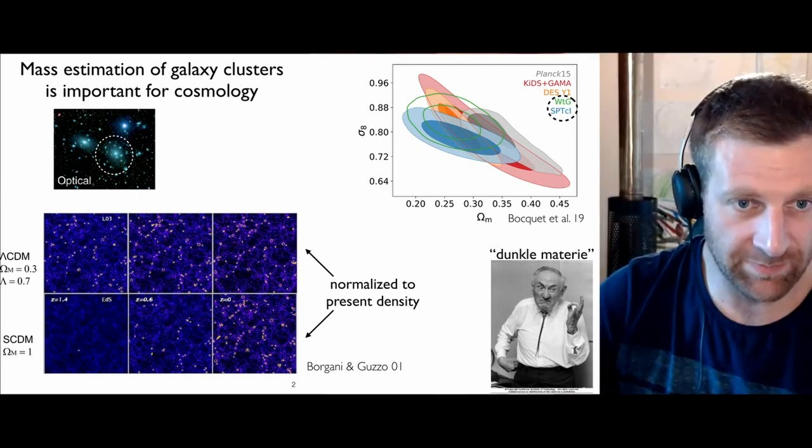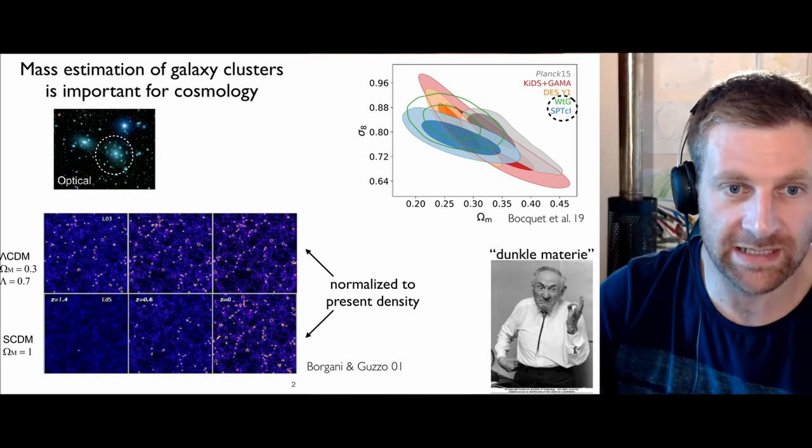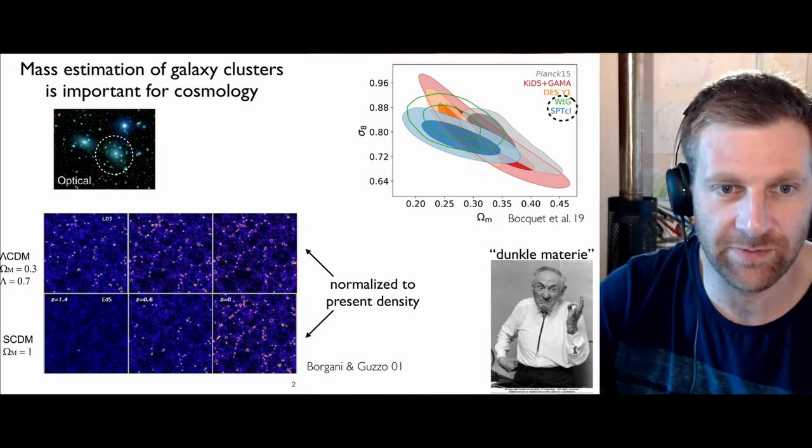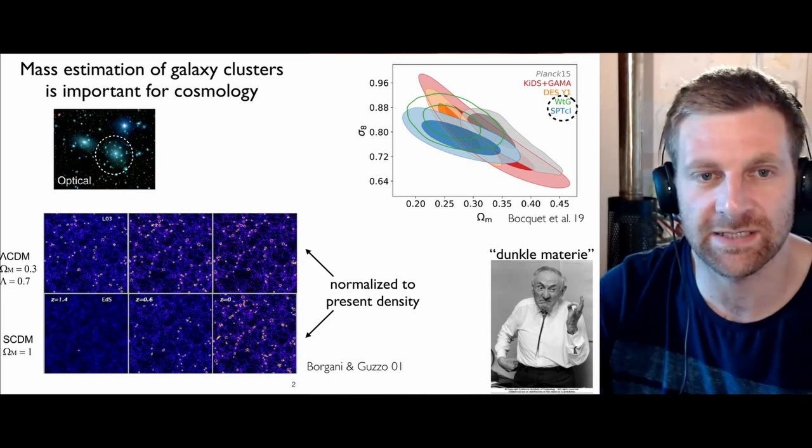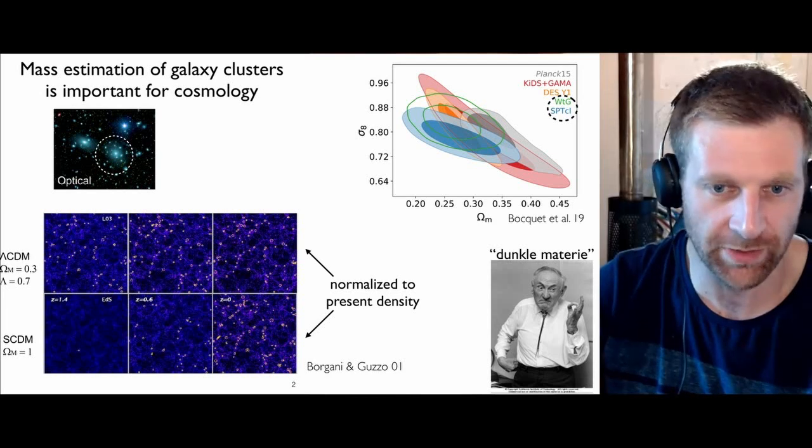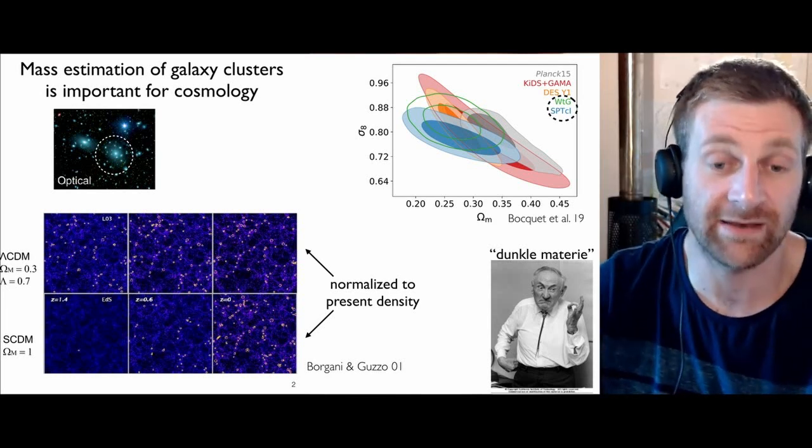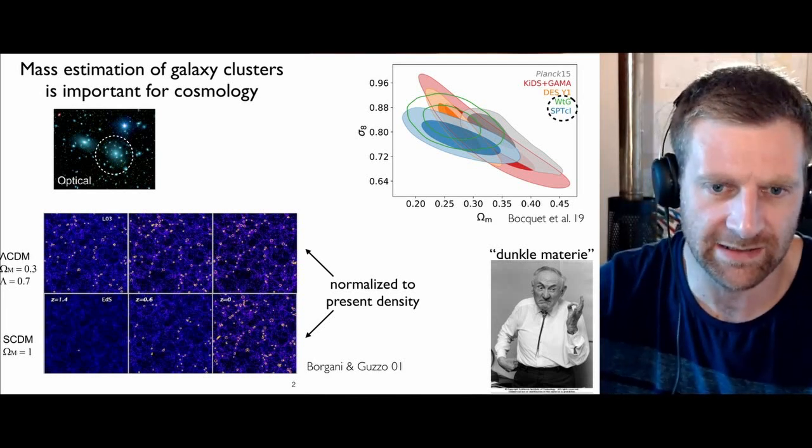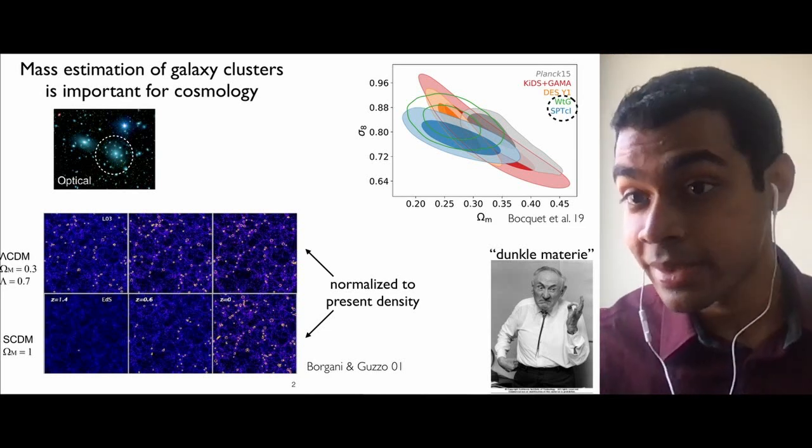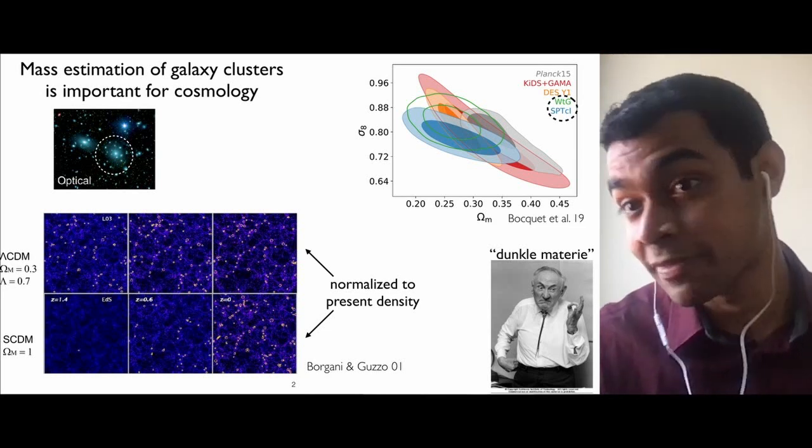Cluster masses was also something that was hinting at lambda before lambda got detected, right? Like people were measuring the masses and only getting omega matter equals 0.3 and thinking what's going on. Right, right, yeah. They have a rich history going back to like many decades in cosmology. The blue one is cluster cosmology, and the green and the blue are cluster cosmology, and others are weak lensing and Planck.